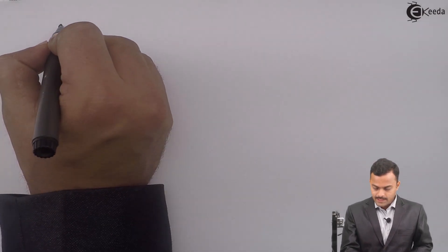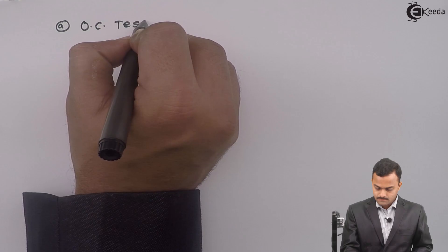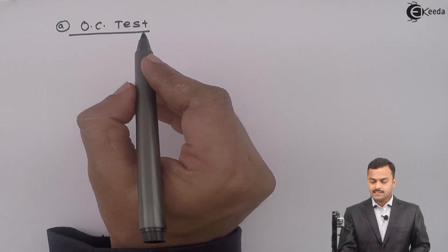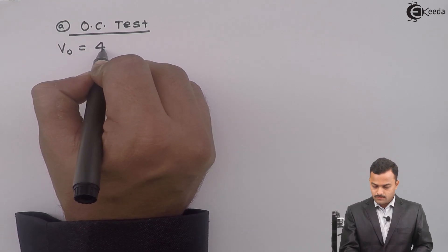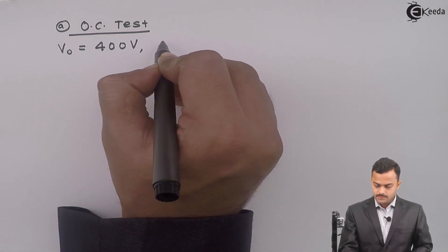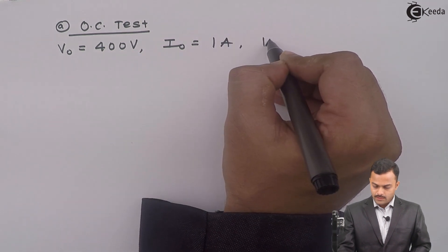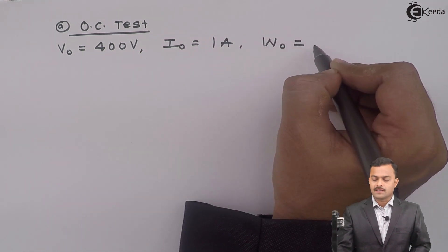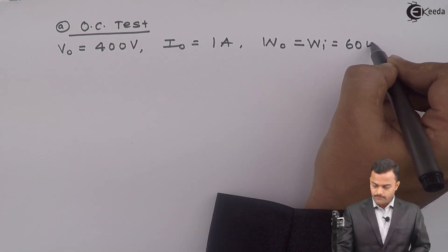First, I will take the test result of open circuit test. So, for OC test, we got V0 400 volt, I0 1 ampere, and W0 is nothing but iron loss WI equal to 60 watt.